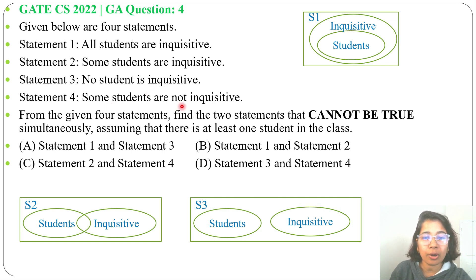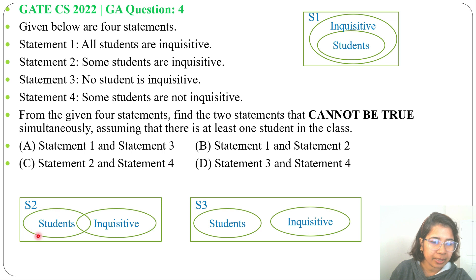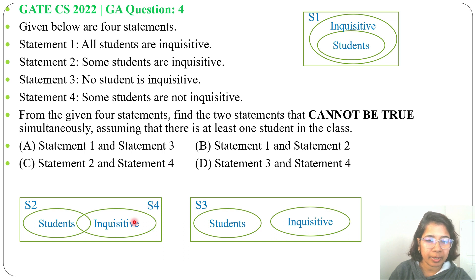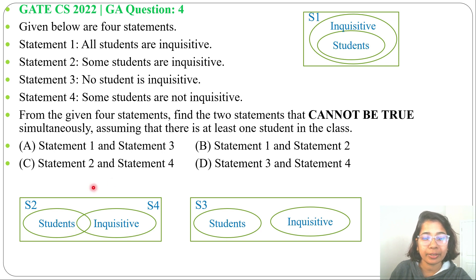Statement 4: Some students are not inquisitive. This will have the same diagram as statement 2 — some students fall outside the inquisitive set. So for statements 2 and 4, there will be the same overlapping diagram: some students are inquisitive and some students are not inquisitive.